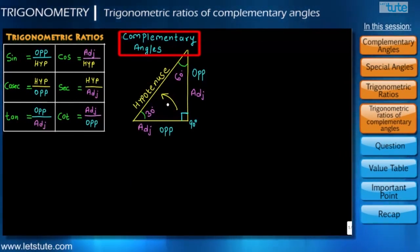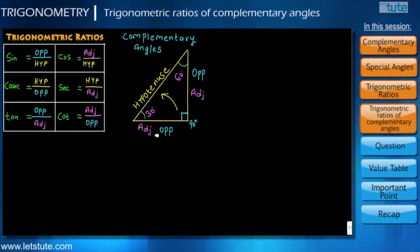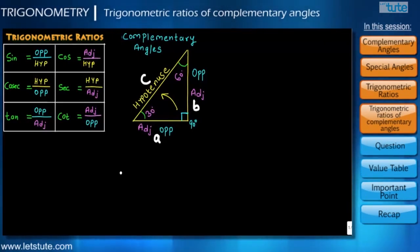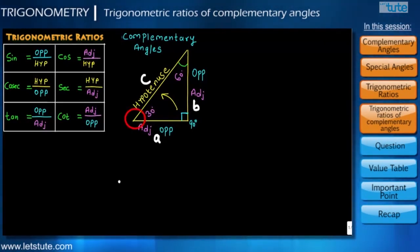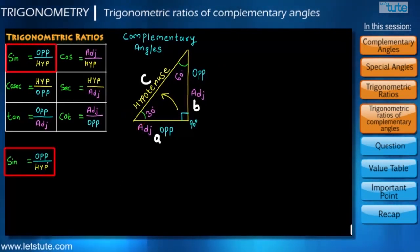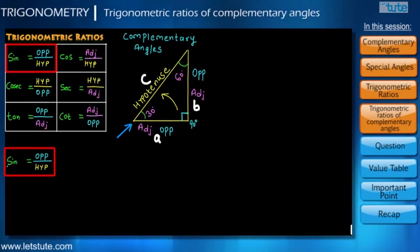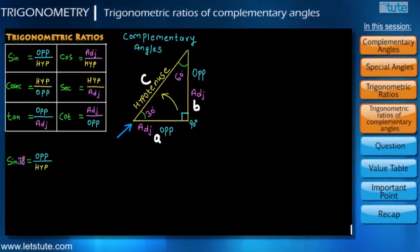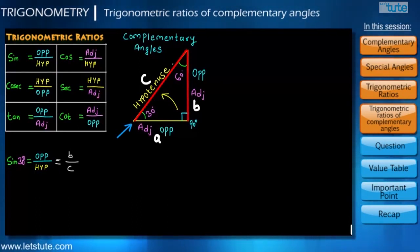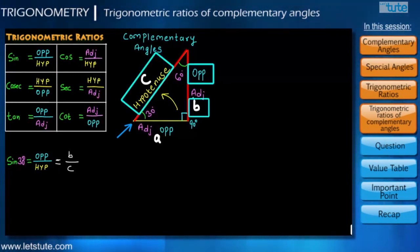Let us give values to the three sides as A, B, and C. If we first consider the 30 degree angle, sin is the ratio of opposite side to hypotenuse, and therefore sin 30 will be equal to B upon C, because B is the opposite side and C is the hypotenuse for the 30 degree angle.